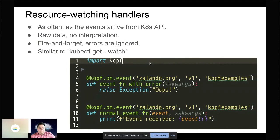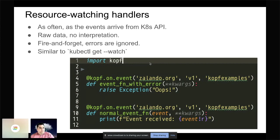When people come from the Go language environment and ask how to make informers with operators, they start at a very low level. The lowest level of resource processing in an operator is basically receiving events as they happen in Kubernetes directly, and for that there is a handler or decorator `kopf.on.event`. It receives the event and you can do something, but if there was an error or you missed the event because the operator was down, there will be no retries — no second chance — because the event has already happened.